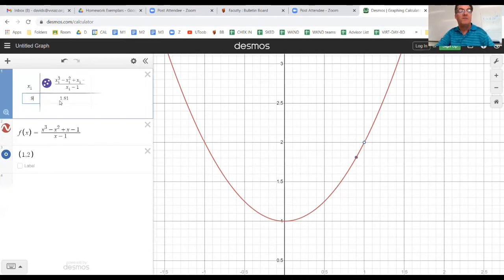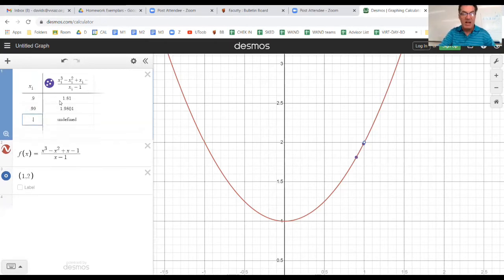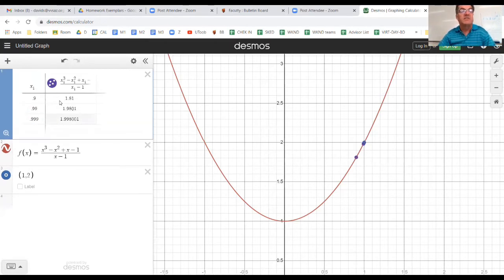First from the left. So here's 0.9. Value of the function is 1.81. Let's try 0.99, that's 1.9801. And just for grins, let's do 0.999. So we can see pretty clearly that that function is approaching two. But we're not quite there yet.